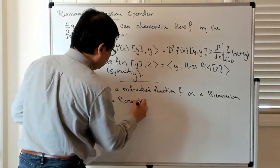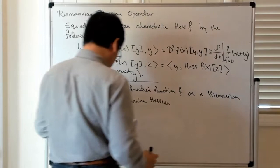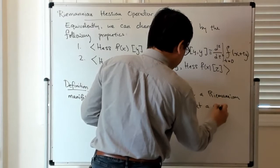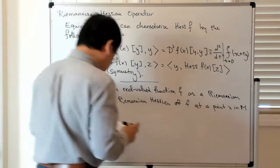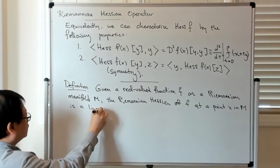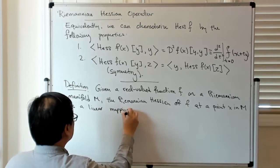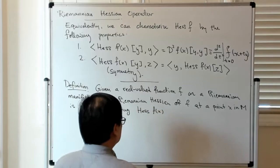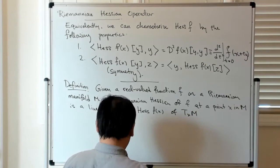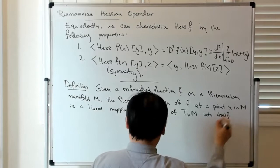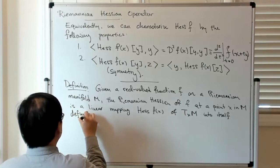right then the Riemannian Hessian of F at a point x in M, it's a linear map. Let's call this Hess f of x of Txm tangent space at x to the manifold M into itself and it's defined by the following.